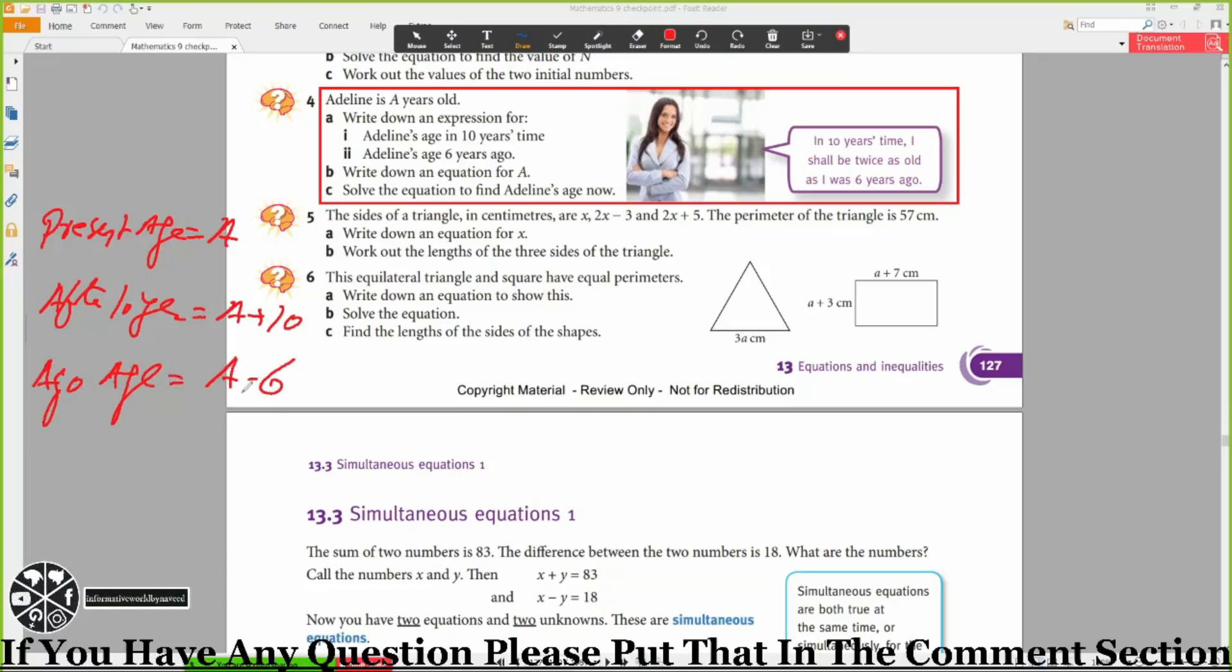Her age is a minus 6 six years ago. Now the statement is: in 10 years time I shall be twice as old as I was six years ago. So in 10 years time, that is a plus 10, will be equal to twice her age six years ago.